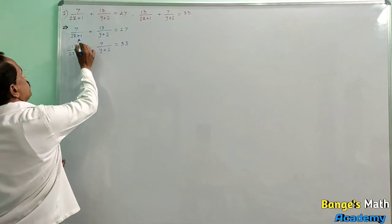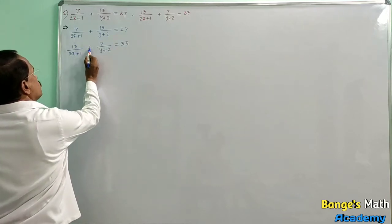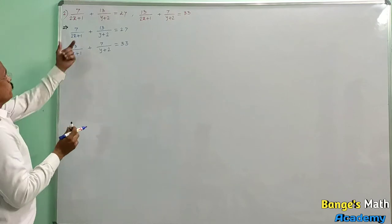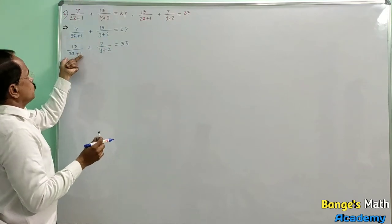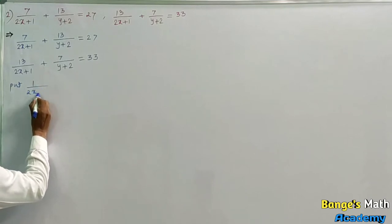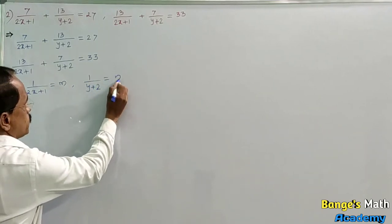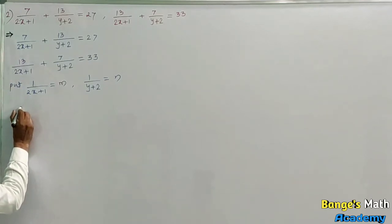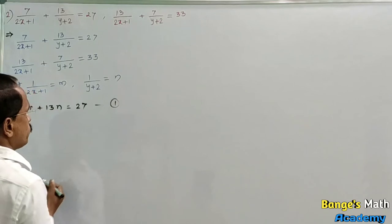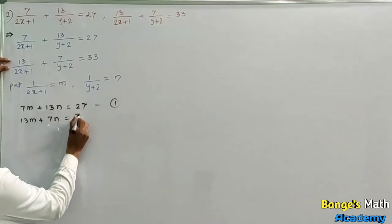Second example: 7 upon 2x plus 1 plus 13 upon y plus 2 is equal to 27, and 13 upon 2x plus 1 plus 7 upon y plus 2 is equal to 33. Substitute new variables for the denominators: put 1 upon 2x plus 1 equal to m and 1 upon y plus 2 equal to n. Then the equations become 7m plus 13n equal to 27 (equation 1) and 13m plus 7n equal to 33 (equation 2).